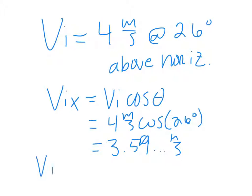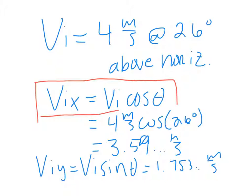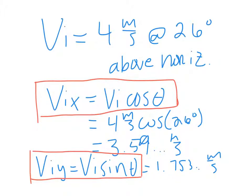To find the y component, viy equals vi times the sine of the angle. So this will be 4 m/s × sin(26°) = 1.753 meters per second. The only real difference when solving these problems is getting the x and y components and adding them into your xy chart. To get x, take initial velocity times cosine of the angle; for y, take initial velocity times sine of the angle. Cosine with x, sine with y — same as when we did vector addition and forces.